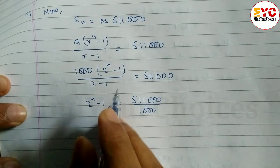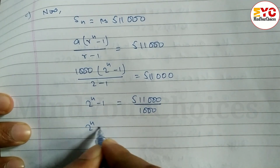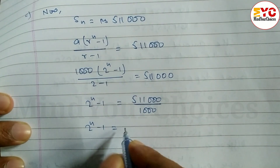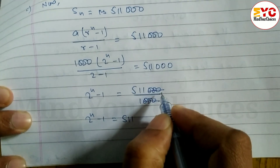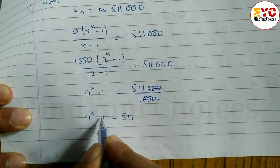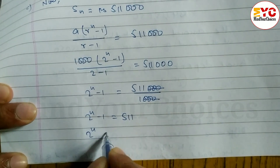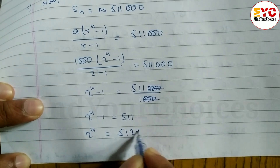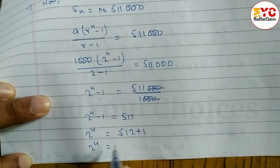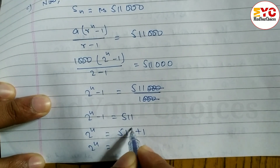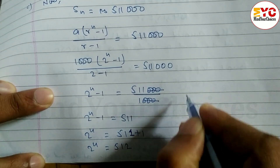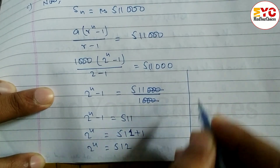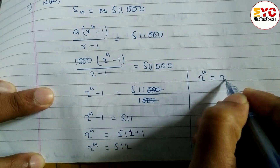Dividing, we get 2 to the power n minus 1 equals 511. So 2 to the power n equals 511 plus 1, which gives us 512. Now we have 2 to the power n equals 512.